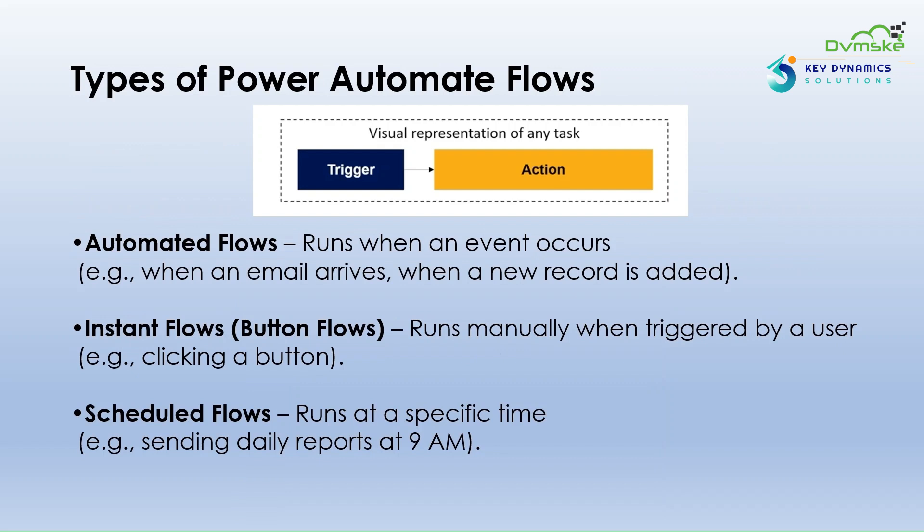Automated Flows start automatically when a specific event happens. Instant Flows run manually when a user triggers them, like clicking a button. Scheduled Flows run on a schedule — daily, weekly or even hourly.